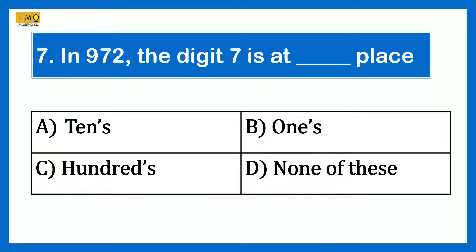In 972, the digit 7 is in the blank place. Option A 10s, Option B 1s, Option C 100s, Option D none of these. The answer is 10s. In 972, 7 is in the 10s place.